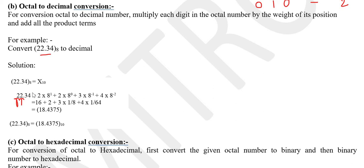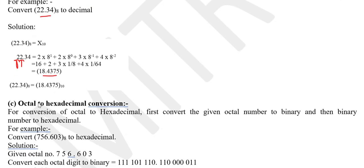If converting binary, we multiply by powers of 2; for hexadecimal, we multiply by powers of 16. For the fractional part, we use negative powers. Solving this, the result is 18.475 in decimal.